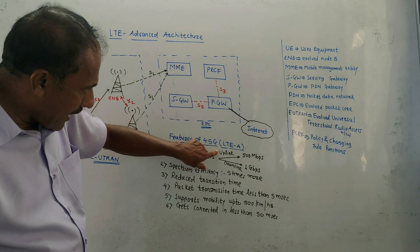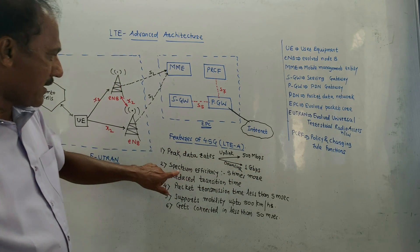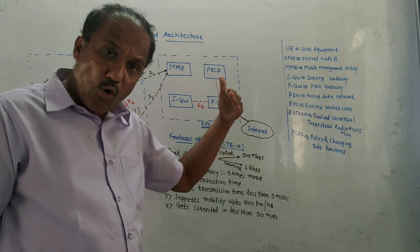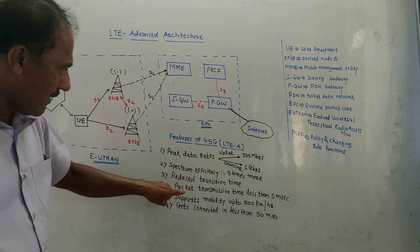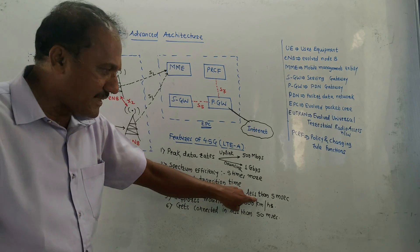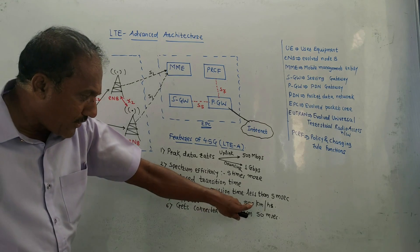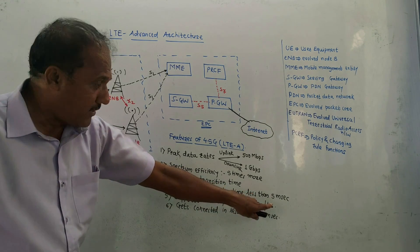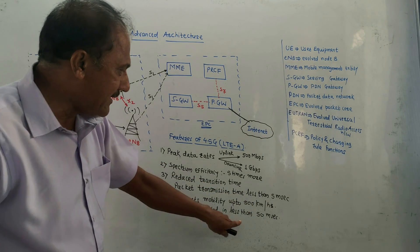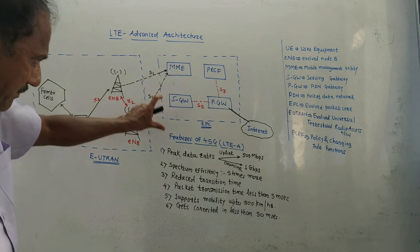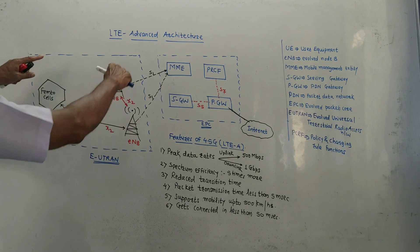The maximum data rate for uplink is 500 Mbps and for downlink it is 1 Gbps. Spectrum efficiency is five times more than the existing LTE network. Reduced packet transmission times are less than 5 milliseconds. It supports mobility up to 500 km/h, which was not the case in normal LTE, and it connects within less than 50 milliseconds.